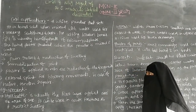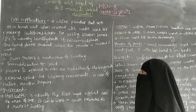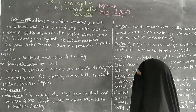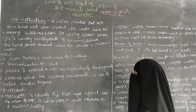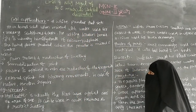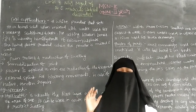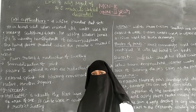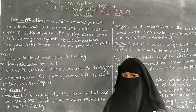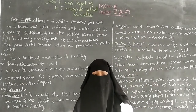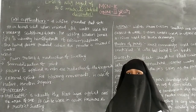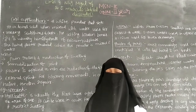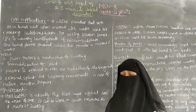Cast application is today's topic. The cast is a white powder that sets to a hard solid when mixed with water. The cast can be applied to the affected limb for immobilization during any fractures, ligamental problems, or joint problems, to support the affected limb and for immobilization.